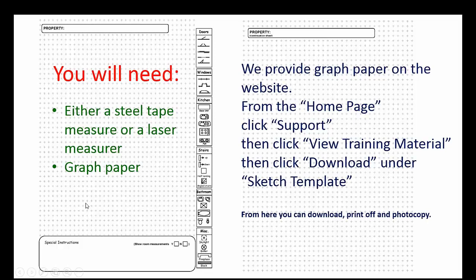You can find the graph paper on the website if you go to the home page and then click the support link, and then there's a section to click called View Training Material. And there you can click the download button under the sketch template, download that, print it off and photocopy it, and take it with you to the property.